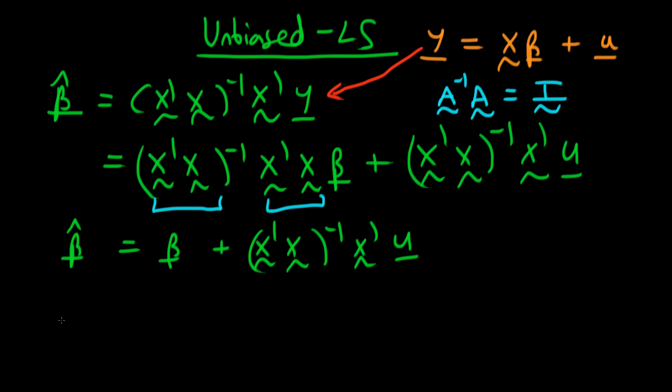Now we have to go ahead and find the expectation of beta hat. So if we go ahead and find the expectation of beta hat then the expectations operator is just a linear operator. This first term here, the beta, is just a constant. The expectation of a constant is just itself.